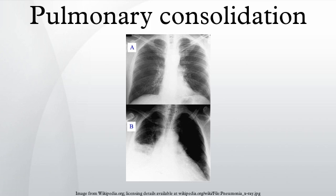A pulmonary consolidation is a region of lung tissue that is filled with liquid, a condition marked by induration of a normally aerated lung. It is considered a radiologic sign. Consolidation occurs through accumulation of inflammatory cellular exudate in the alveoli and adjoining ducts.